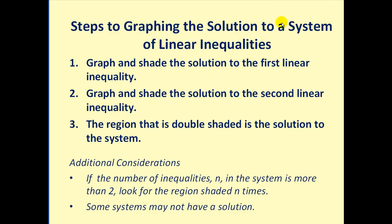The steps to graphing the solution to a system of linear inequalities are as follows. Step one, we will graph and shade the solution to the first linear inequality. Step two, we'll graph and shade the solution to the second linear inequality on the same coordinate plane. The region that is double shaded is the solution to the system. If the number of inequalities n in the system is more than two, we'll look for the region shaded n times. Also, some systems may not have a solution.